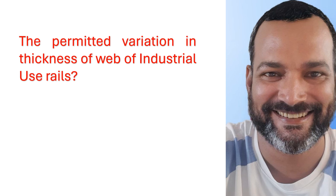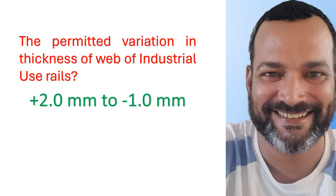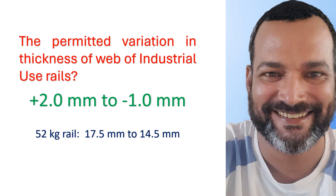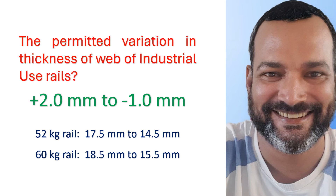The permitted variation in thickness of web of industrial use rail is +2.0 millimeter to -1.0 millimeter. For example, for the 52 kg rail it will be 17.5 mm to 14.5 mm, and for 60 kg rail it will be 18.5 mm to 15.5 mm.